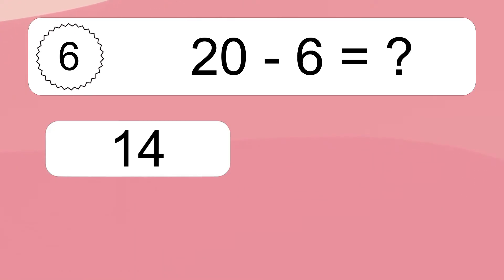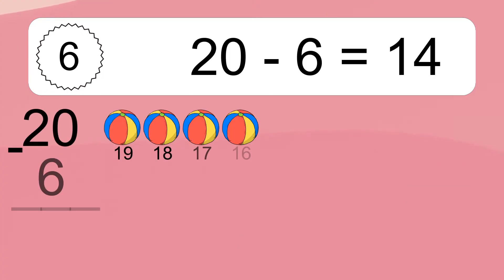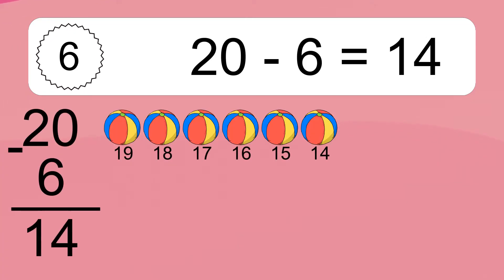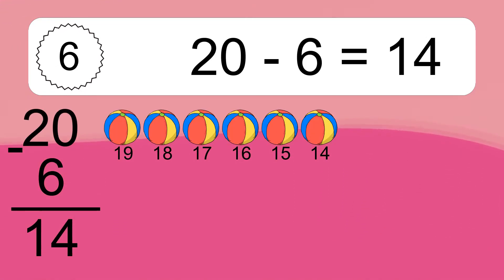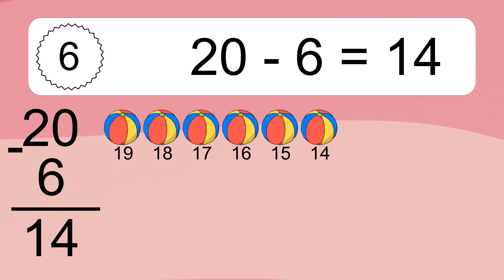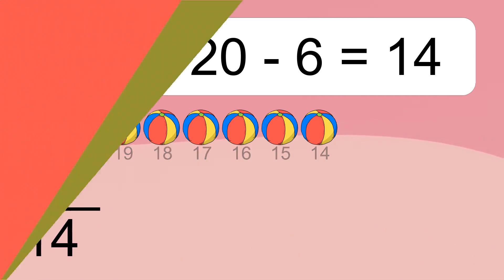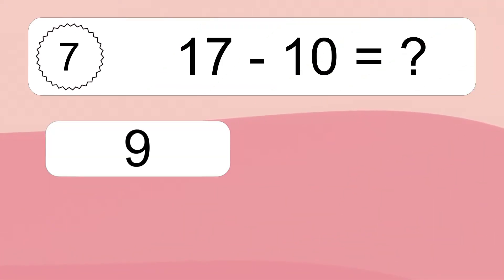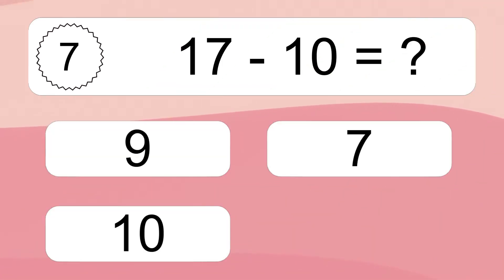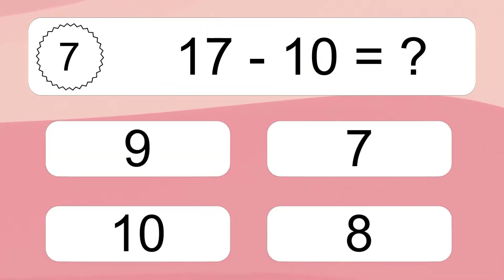20 minus 6 equals what? 20 minus 6 equals 14. Let's count it. 19, 18, 17, 16, 15, 14.